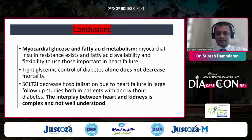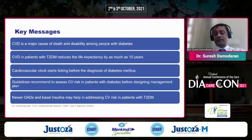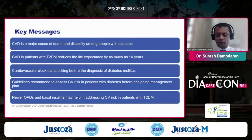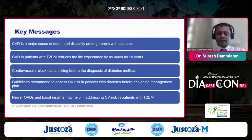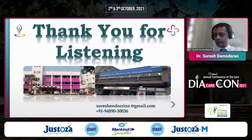CVD is a major cause of death and disability among people with diabetes, no question about it. CVD in patients with type 2 diabetes reduces life expectancy by almost 10 years, purely because of CVD, and the cardiovascular clock starts even before the diagnosis of diabetes. Guidelines recommend assessing CV risk in patients with diabetes before designing the management plan. Newer antidiabetic agents and basal insulin may help address the CV risk in patients with type 2 diabetes.